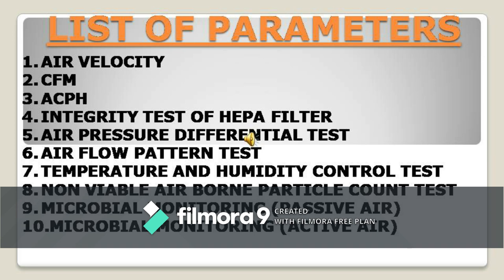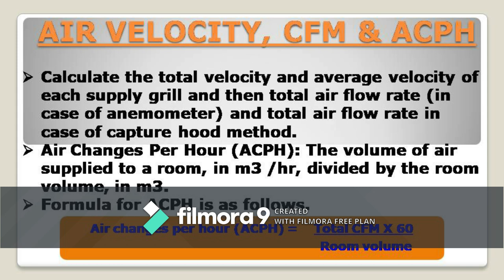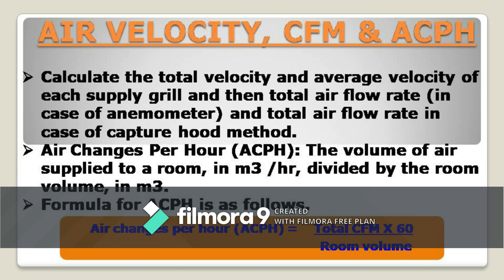First, you need to calculate the air velocity. Here we use a capture hood and anemometer instrument to check the air velocity, then we calculate the average velocity of five points. Afterwards, we calculate CFM, and then finally ACPH. The formula to calculate ACPH is: Air Changes Per Hour = Total CFM × 60 ÷ Room Volume. Remember that your ACPH acceptance criteria shall be within the design qualification specification for each area.